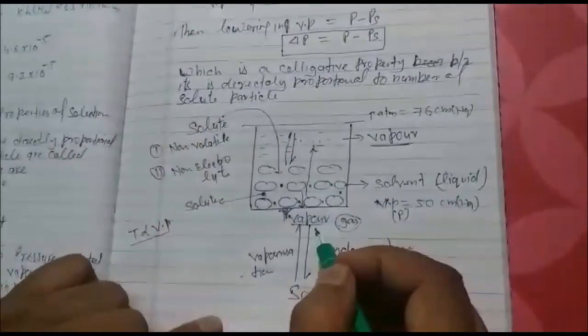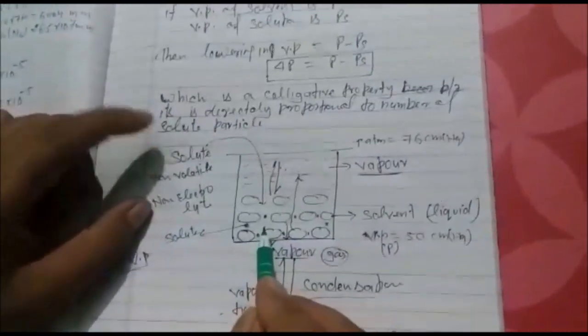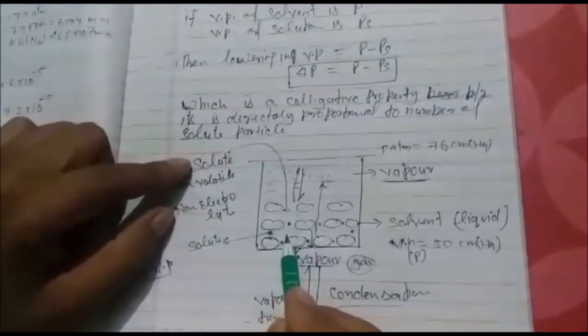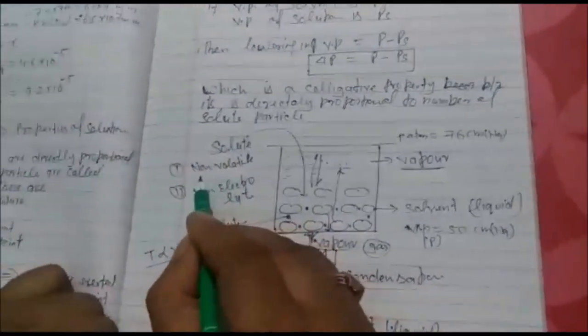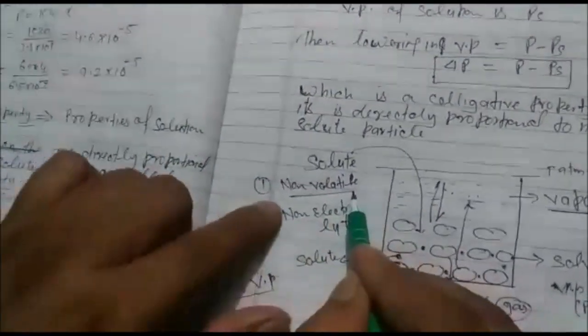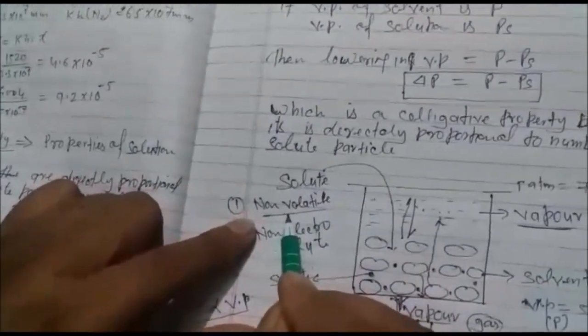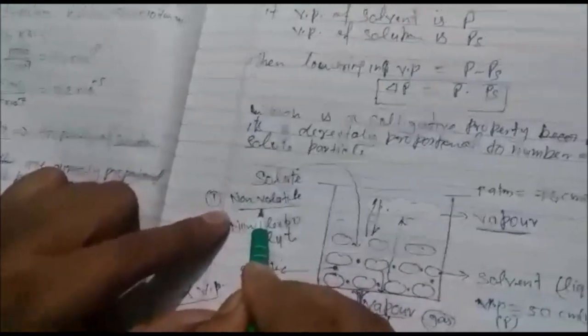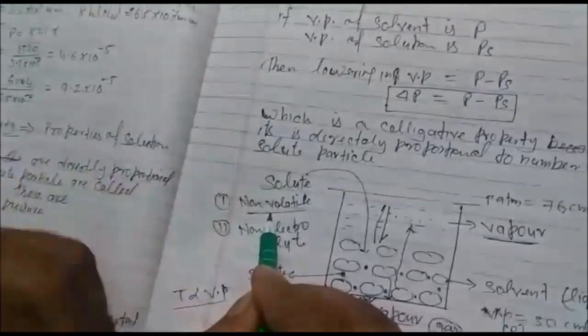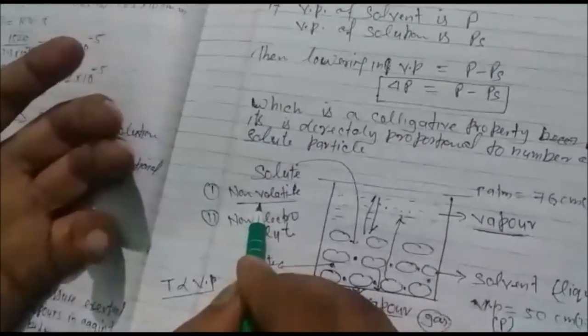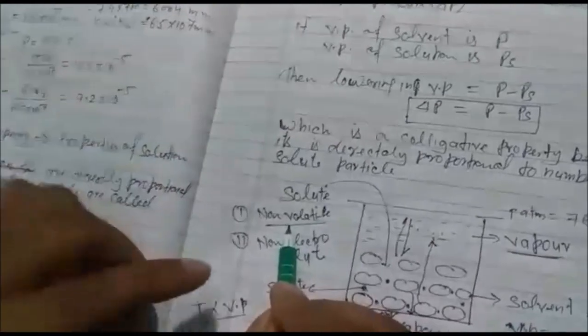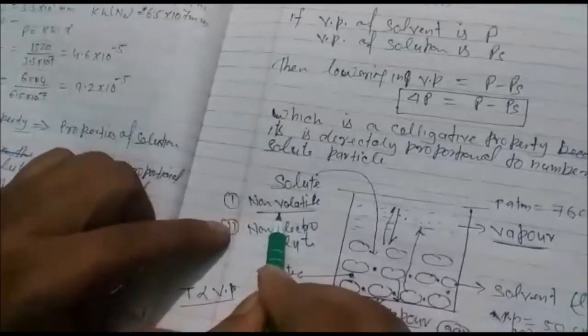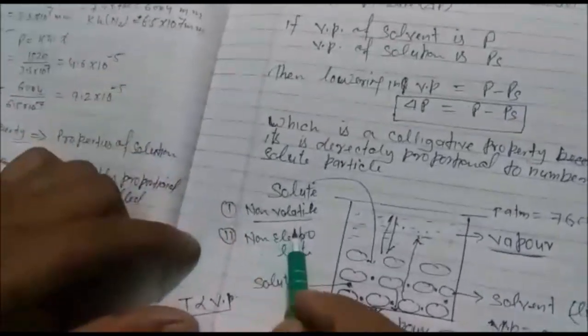Now when you add solute into the liquid, solute, but solute, the nature of solute should be two types: non-volatile and non-electrolyte. What is non-volatile? Substance which can change into liquid after heating, that is volatile. So solute should be non-volatile. It means this should not change into liquid like sugar, salt.